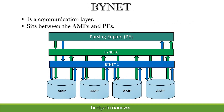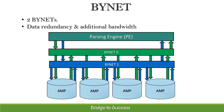BYNET is a communication layer that sits between the AMPs and the parsing engine. The PE transmits the plan to the AMPs via the BYNET, and in response, the data that the AMPs retrieve from disk drives is returned to the PE via the BYNET. There are two BYNETs in Teradata: BYNET 0 and BYNET 1. If one BYNET fails, the second one can take its place. When data is large, both BYNETs can be made functional, which improves communication between PE and AMPs, thus speeding up the process.